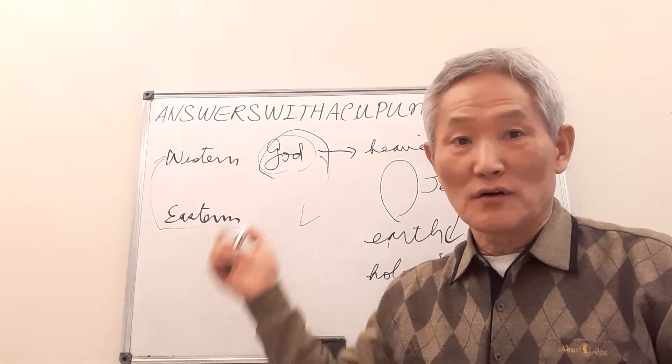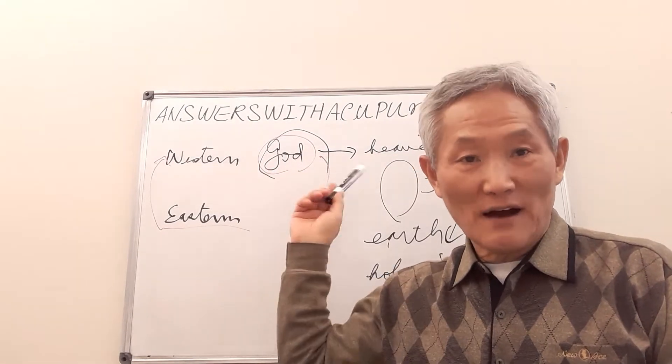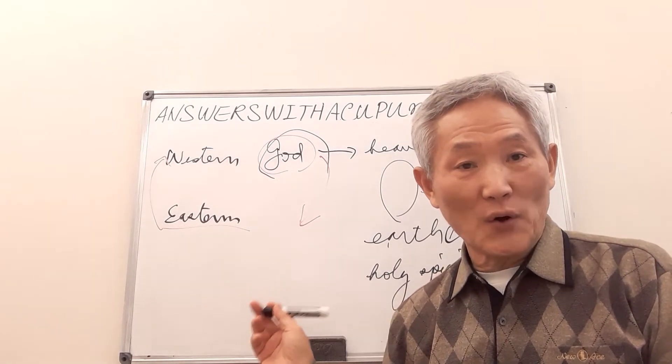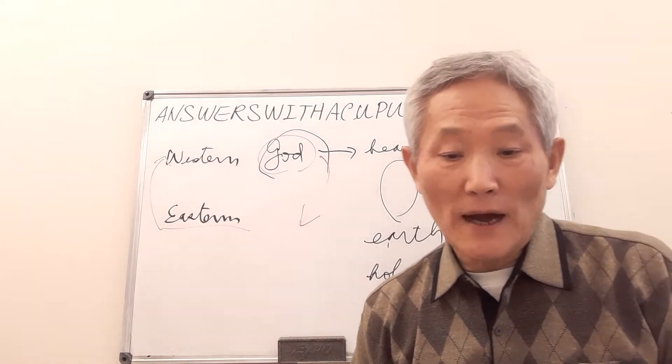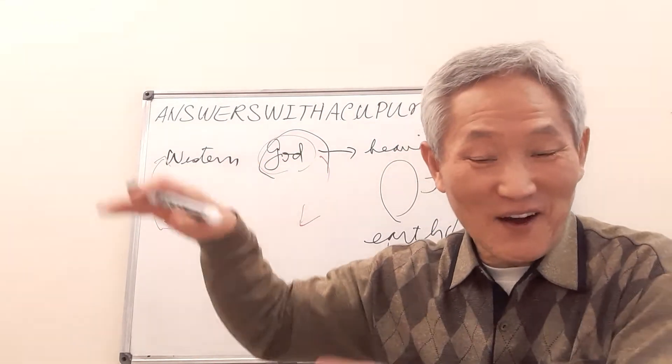So, the Trinity is heaven, God, Holy God, and then Holy Jesus, then Holy Spirit. Okay, now, so that's why Trinity become accomplished.